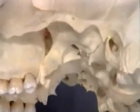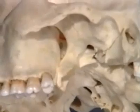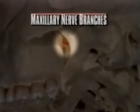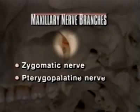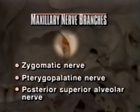The maxillary nerve exits the cranium through the foramen rotundum to reach the pterygopalatine fossa, where it gives off several branches: the zygomatic nerve, the pterygopalatine nerve, and the posterior superior alveolar nerve.